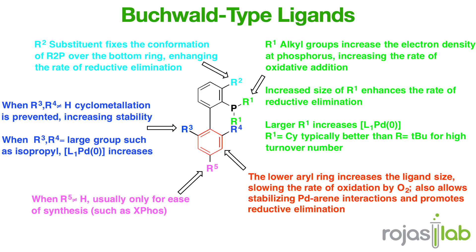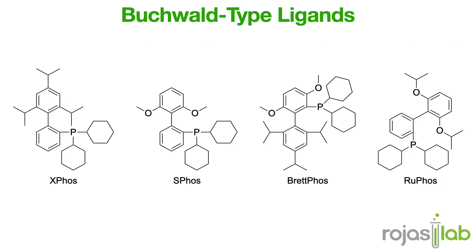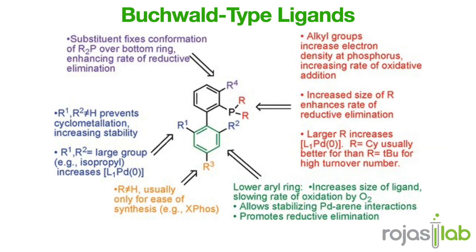Professor Stephen Buchwald's group at MIT developed a series of bulky, electron-rich phosphine ligands that dramatically improve reaction efficiency. These ligands, such as X-Phos, S-Phos, BrettPhos, and RuPhos, help stabilize the palladium catalyst, enhance oxidative addition, and facilitate facile reductive elimination. In this figure, we can see the different structural features of the biaryl phosphine ligands and how each of these contributes to the efficiency of the catalysts derived from them.